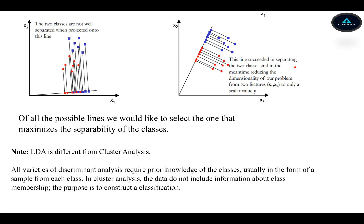As we can see from this diagram here. Now, of all the possible lines, we would like to select the one that maximizes the separability of the classes. If we look into these two diagrams: